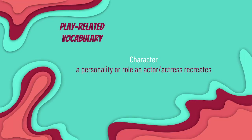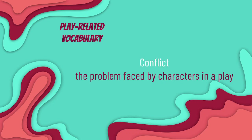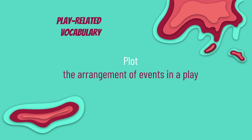Character — a personality or role an actor or actress recreates. Climax — the point of greatest dramatic tension or transition in a play. Conflict — the problem faced by characters in a play. One-act play — a play about a single incident and set in a single setting or location. Plot — the arrangement of events in a play.